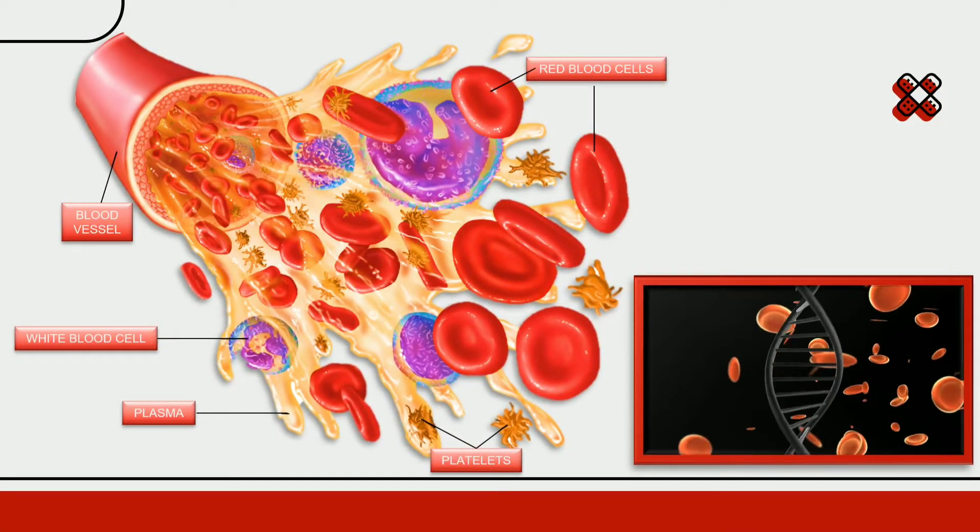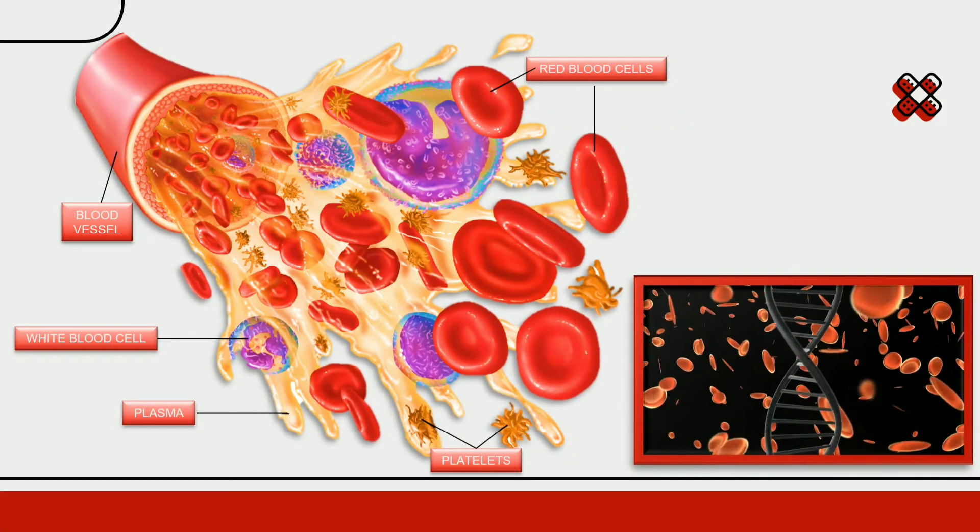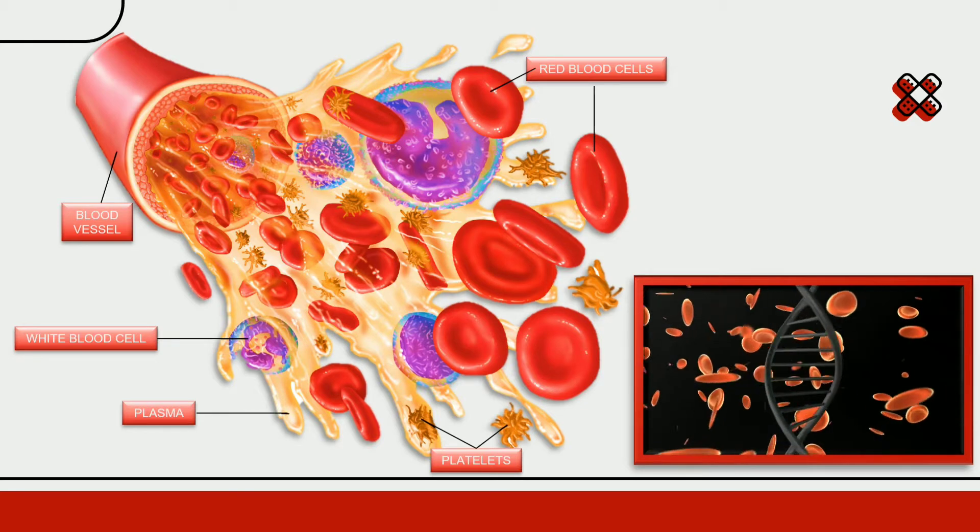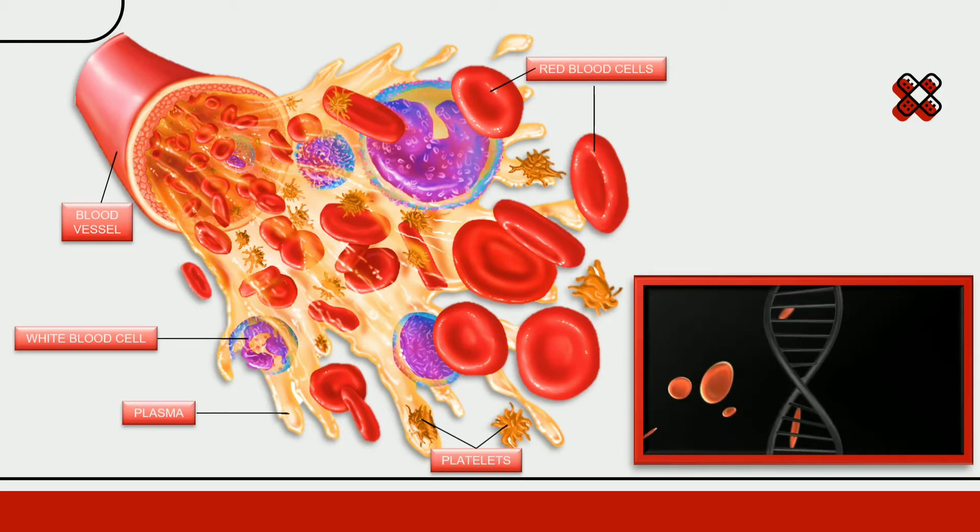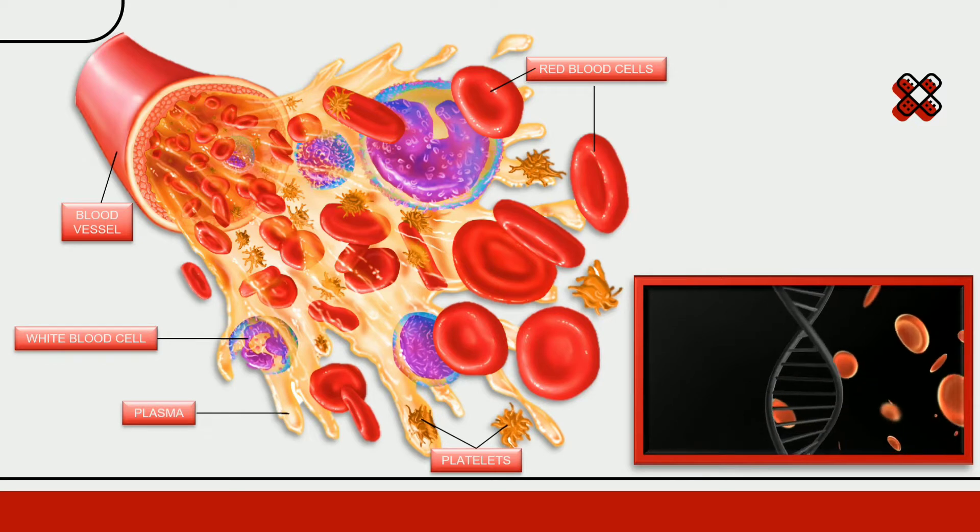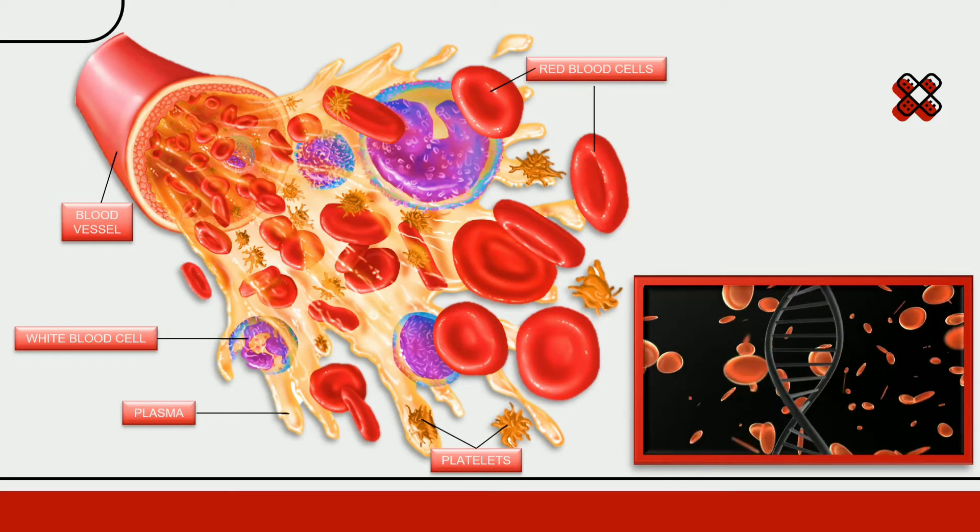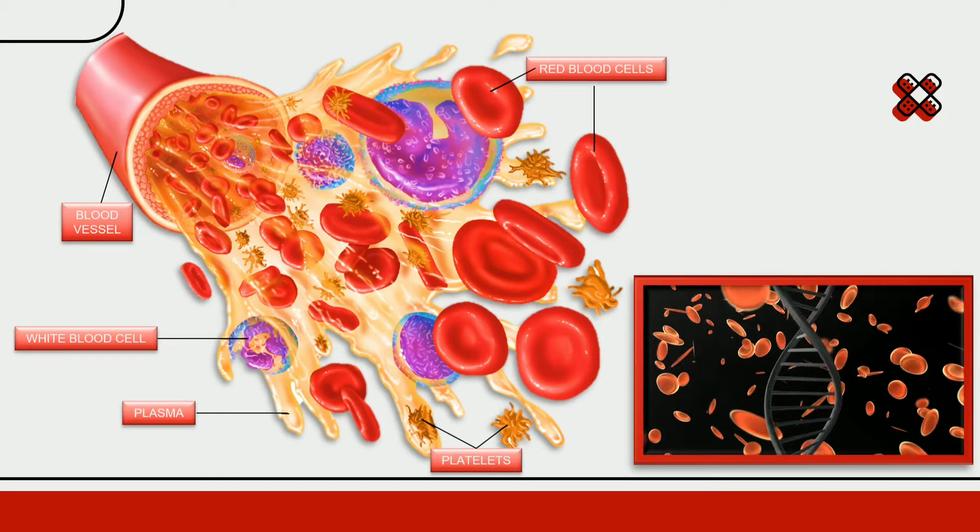Even though the blood of all human beings looks alike, in reality it is not so. Our blood is mainly composed of red blood corpuscles, white blood corpuscles, platelets, and plasma.